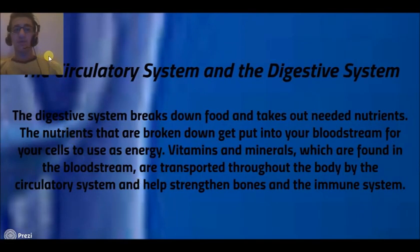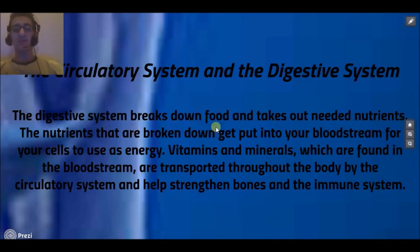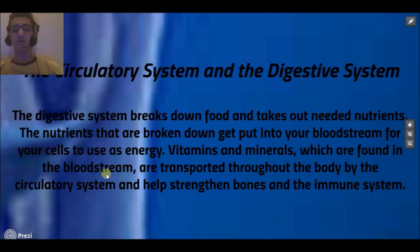The circulatory system and the digestive system are also connected. The digestive system breaks down food and extracts needed nutrients, which get put into your bloodstream for your cells to use as energy. Vitamins and minerals found in the bloodstream are transported throughout the body by the circulatory system and help strengthen bones and the immune system.